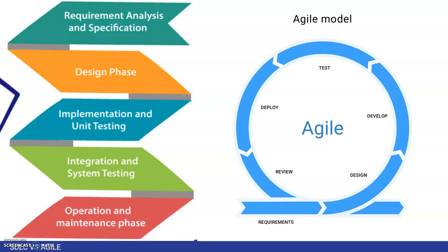Agile works in a single short cycle: requirement, design, develop, test, deploy, and review. This short cycle means you take some requirements, implement them, test them, and close them — but in a small sprint cycle. You are able to do deployment very fast compared to SDLC.